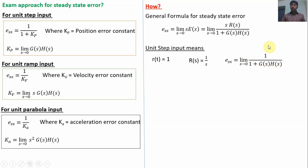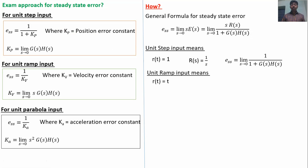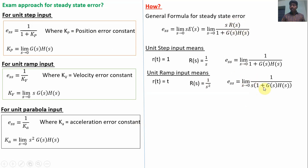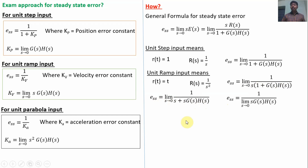For ramp input, R(t) = t, so R(S) = 1/S². Substituting: E_ss = limit S→0 of S·(1/S²)/[1+G(S)H(S)] = limit S→0 of 1/(S·[1+G(S)H(S)]). As S→0, the term S in the denominator dominates, giving E_ss = 1 / [limit S→0 of S·G(S)H(S)] = 1/Kv, where Kv is the velocity error constant.